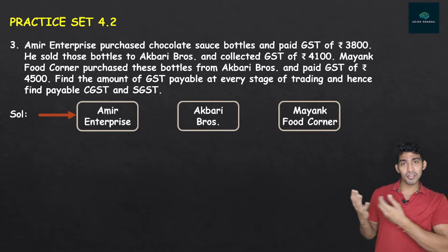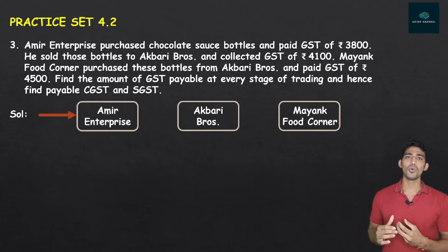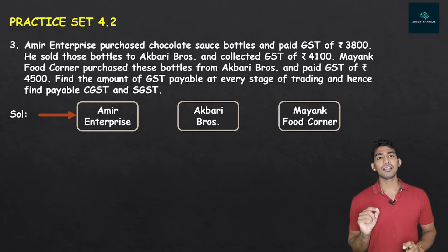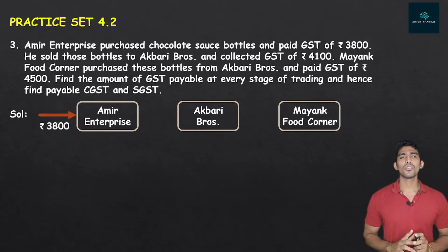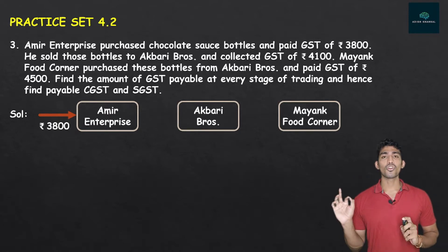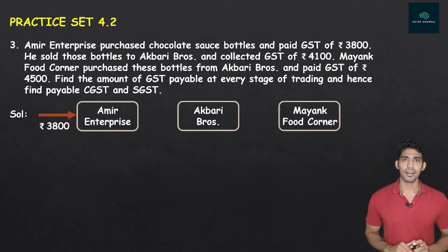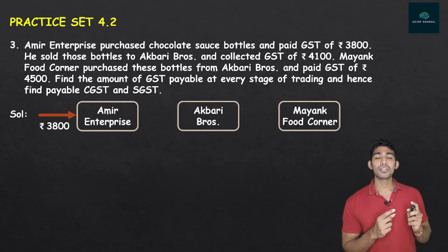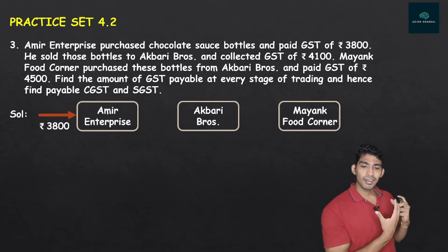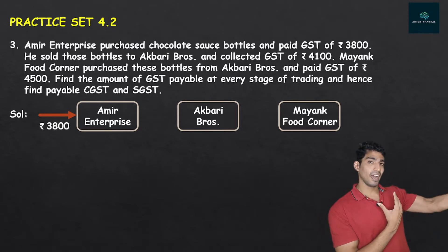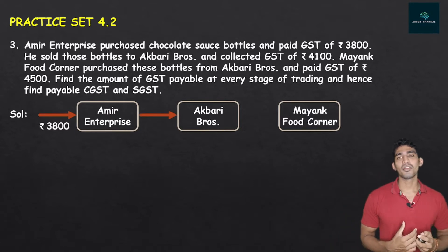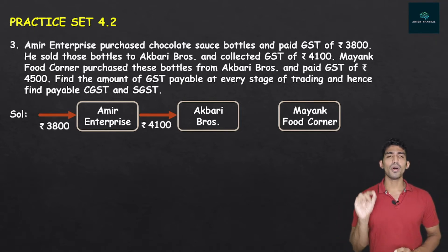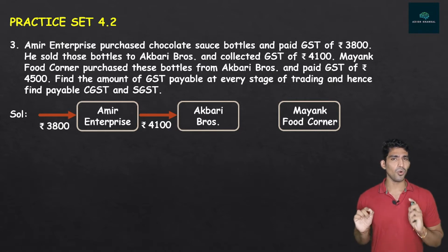Amir Enterprise is purchasing chocolate sauce bottles, so the arrow points towards him. When purchasing, he paid GST of Rs. 3,800 — I have written 3,800 there. After that, he sold those chocolate sauce bottles to Akbari Brothers and collected GST of Rs. 4,100. The arrow now points towards Akbari Brothers, and Amir Enterprise collected that 4,100 rupees GST.